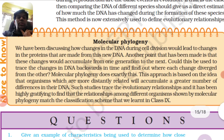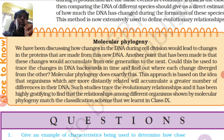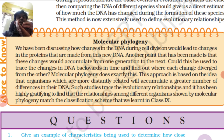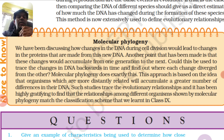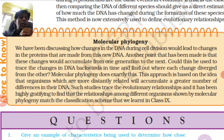A small topic is molecular phylogeny. We have been discussing how changes in the DNA during cell division lead to changes in the proteins that are made from the new DNA. When an individual's DNA changes, it will not be exactly the same as the parent DNA — there is a little change. It will code for a new type of protein. Another point is that these changes would accumulate from one generation to the next. Could this be used to trace the changes in the DNA backwards in time and find out where each species diverged from each other?